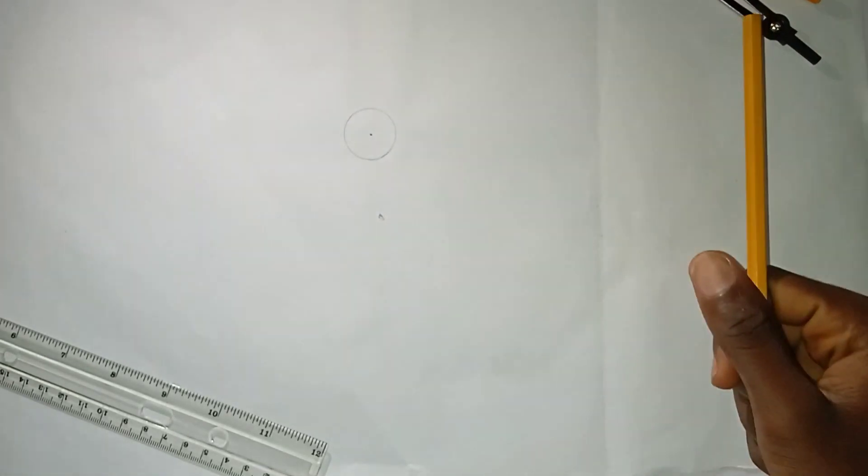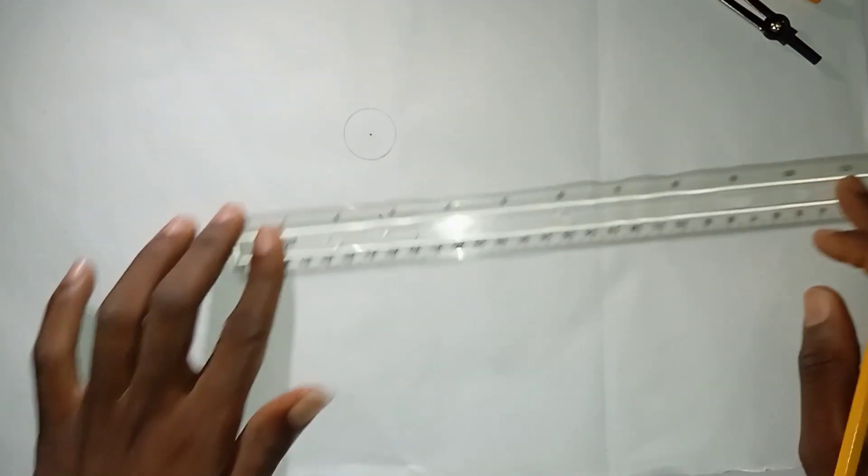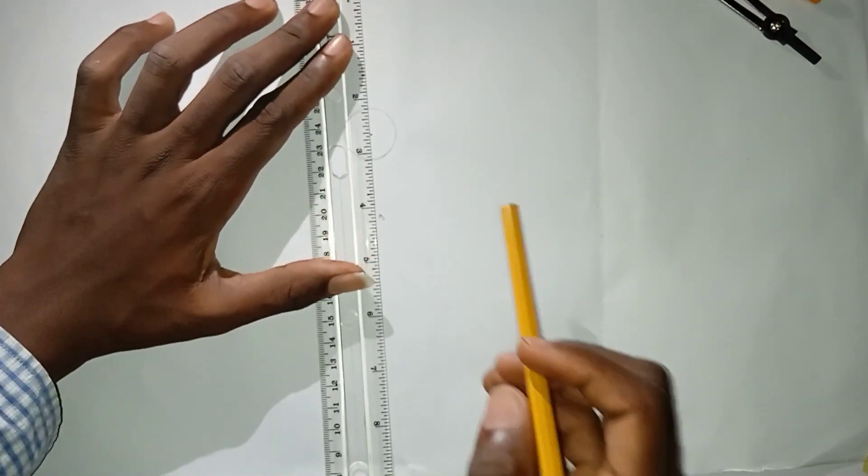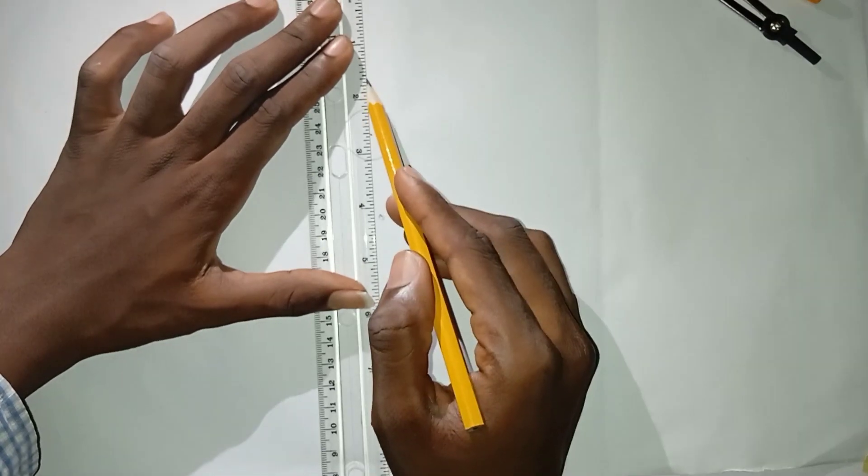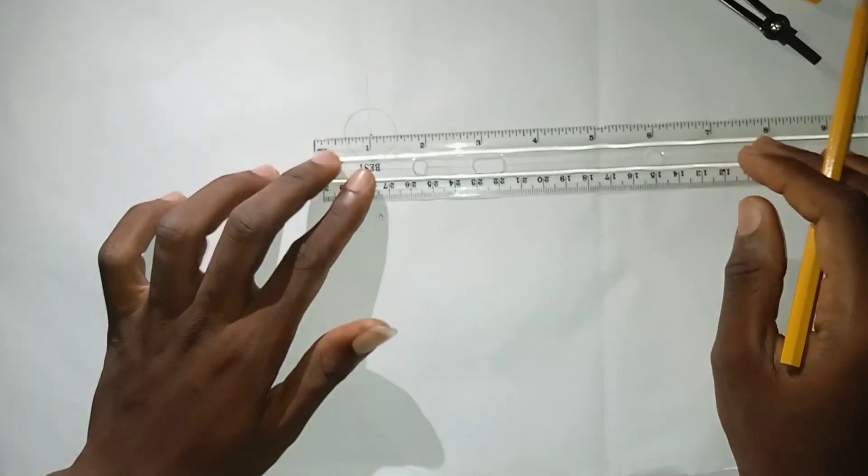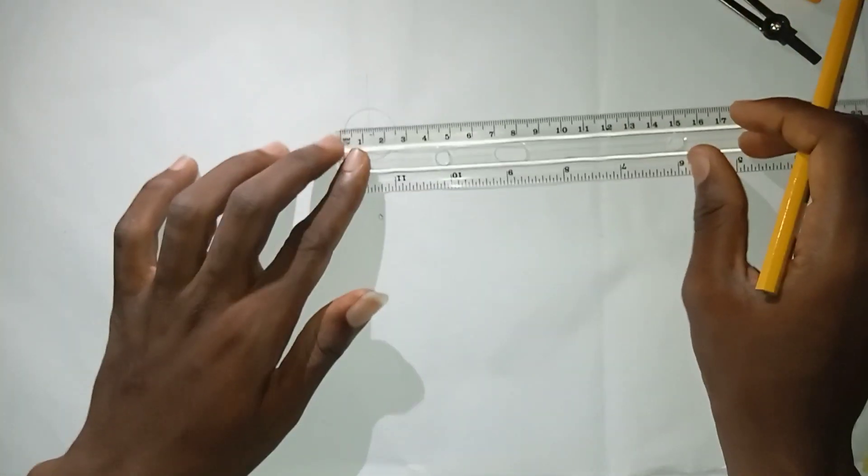Now we'll be given that the horizontal distance between the cam center to the roller center is 18. From here I'll draw a straight line first.